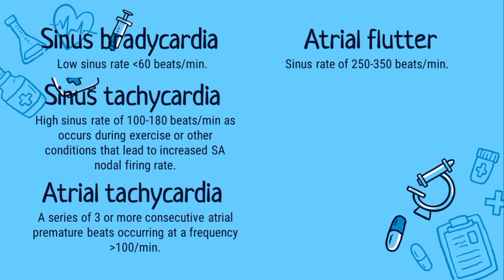Next is the atrial flutter. This type of arrhythmia occurs when a short circuit in the heart causes the upper chambers to pump very rapidly at a sinus rate of 250 to 350 beats per minute.